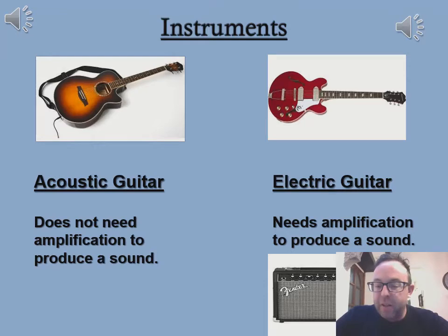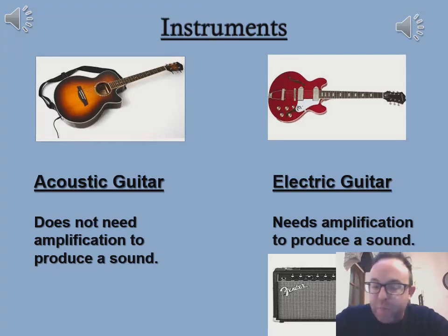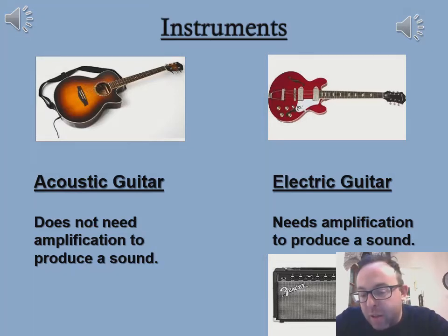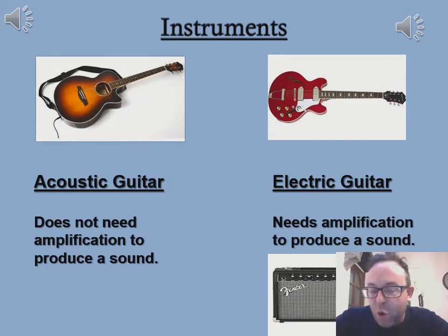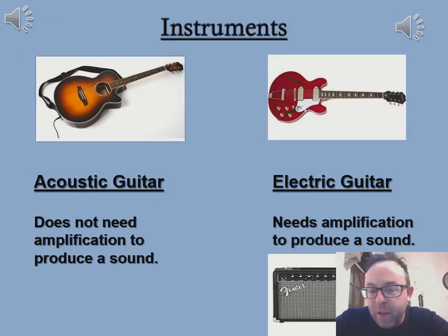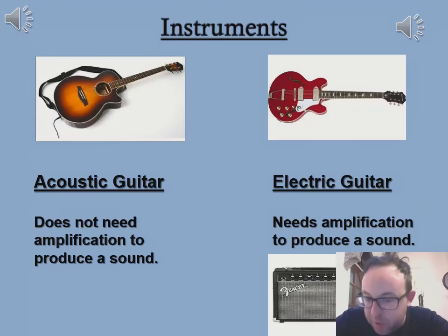The acoustic guitar does not need amplification to produce a sound — you don't have to plug it in, you can just pick it up, start strumming, and there you go. There are advantages and disadvantages to that: it's great for sitting in your living room or in the classroom, maybe not so much when everybody else is playing along with you. It's hollow and a very light instrument, easy to carry. The electric guitar, however, is a solid-bodied instrument, meaning the wood is solid, and to make a proper sound you need what's called an amplifier connected with a cable.